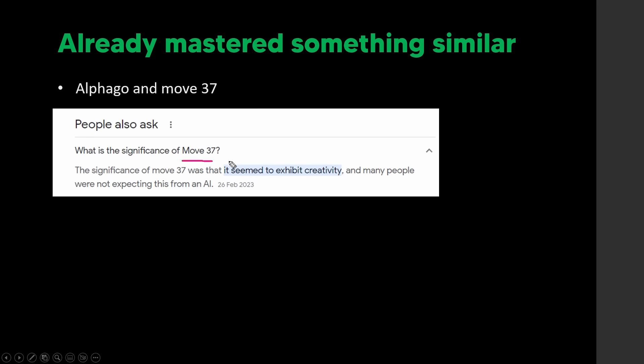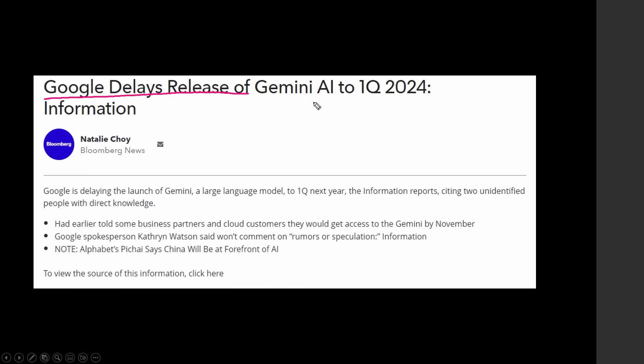Move 37 was a one-in-ten-thousand move nobody expected from an AI, seemingly exhibiting creativity. That brings us to the news that Google has delayed the release of Gemini AI to Q1 of 2024. We don't know if it's because it's harder than expected, they're changing their angle, or they just want to perfect it. Either way, if Gemini does come out with these capabilities, it will be interesting to see how it compares to GPT-4 and whether it's similar to Q-Learning.